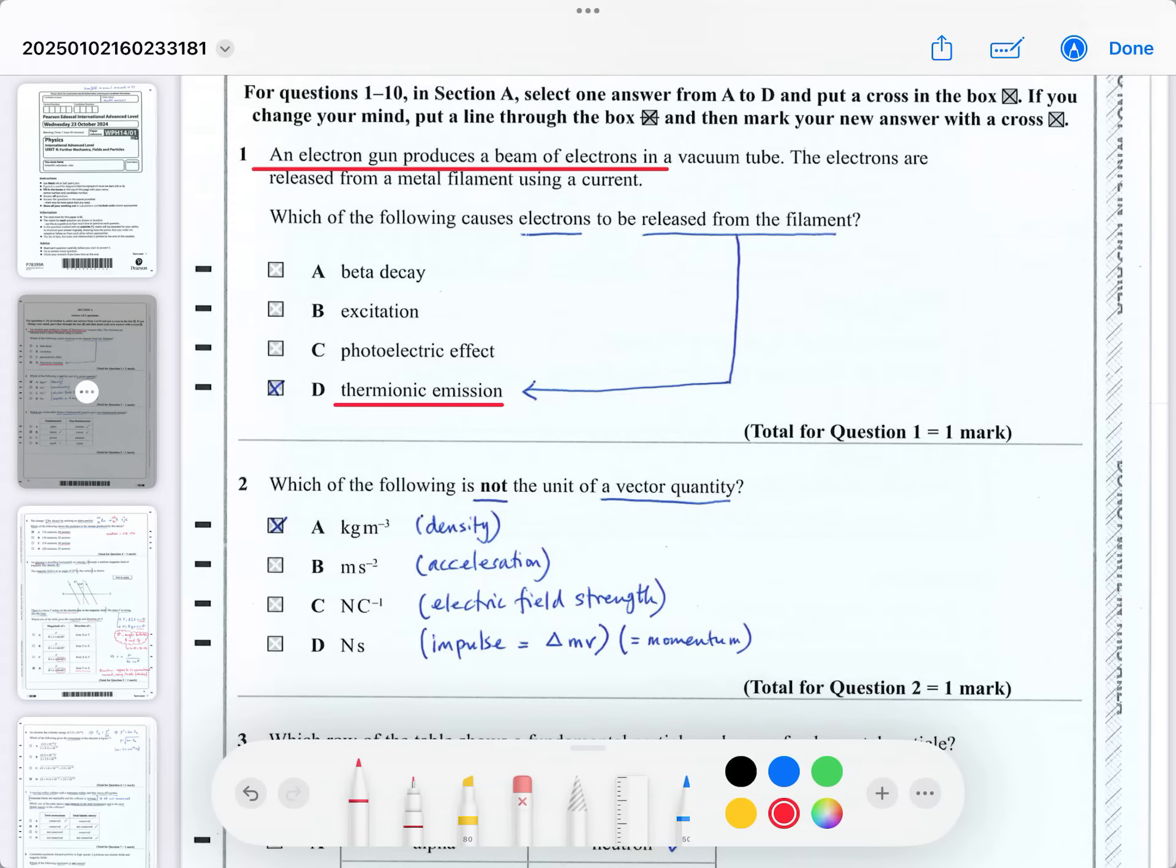Question two says, which of the following is not the unit of a vector quantity? Well, the first one is kilograms per meters cubed, which is density. That's not a vector quantity. The second one is acceleration, which is a vector quantity. Newton's per coulomb is the amount of force on a unit charge, so that's electric field strength, which is a vector quantity. Newton seconds would be impulse, and impulse is equal to a change in momentum, and momentum is a vector quantity. So the answer is A.